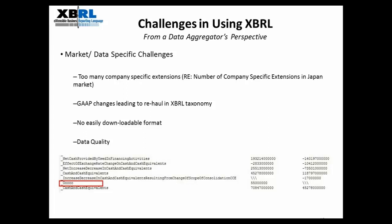Also, in some markets, there is no easily downloadable format of the XBRL taxonomy, making it a challenge for us to download and do the mapping from our own data aggregator's perspective. We also face certain data quality issues. As you can see from this screenshot, a description of all zeros or all zeros is meaningless to us and does not tell us what the item is and what we can tag it to. These data quality issues make it difficult for us to audit the XBRL documents, since it was supposed to be processed automatically.